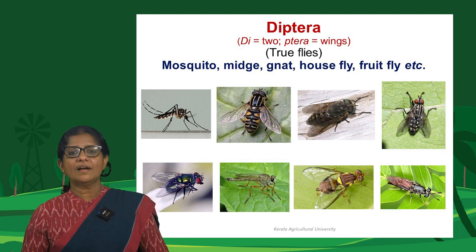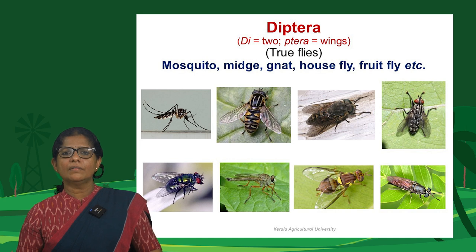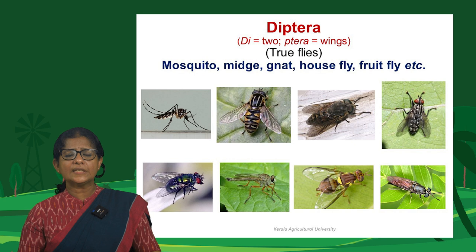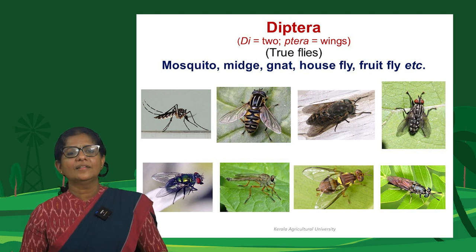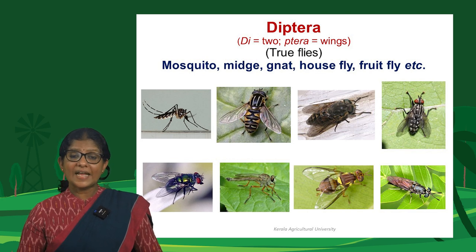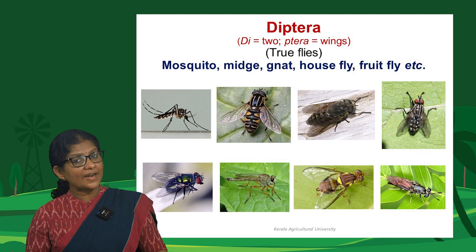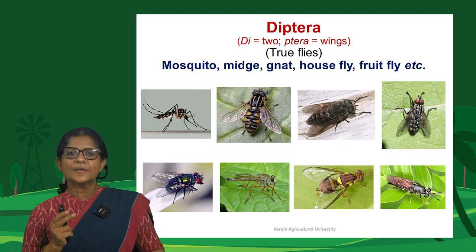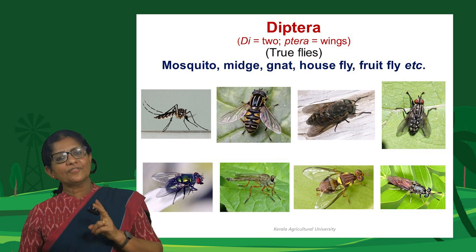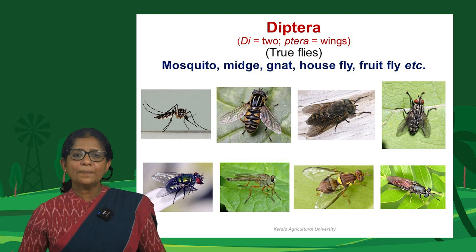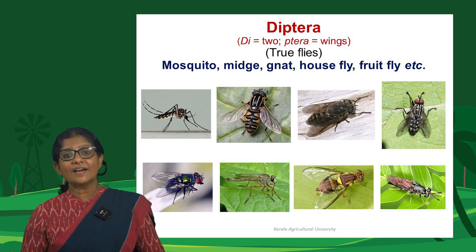Diptera are the true flies — mosquitoes, midges, gnats, housefly, fruit fly — and are highly economically important, with many being vectors of human and animal diseases. The name Diptera means 'two wings' — their hindwings are greatly reduced as balancing organs called halteres, leaving only two functional wings. Other insects named 'flies' like dragonflies and damselflies are not true flies; true flies belong exclusively to order Diptera.